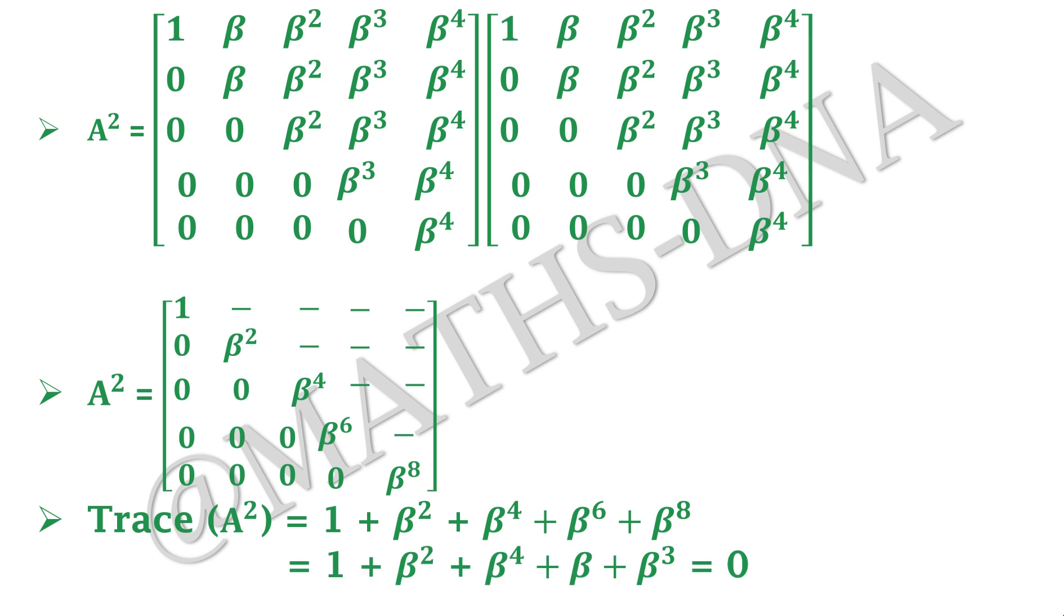Now here we get it as 1 + β² + β⁴ + β. β⁵ = 1, so we get β⁶ = β, and β⁸ becomes β³. And that is nothing but again the sum of the fifth root of unity is equal to 0.